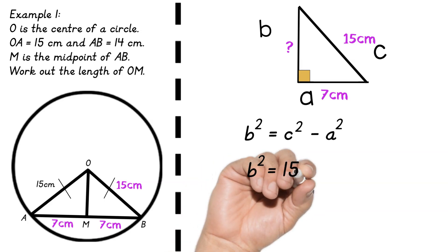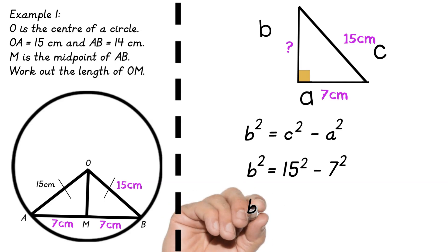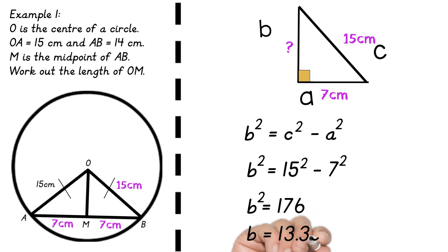Work out 15 squared minus 7 squared on your calculator. So I get b squared equals 176. So to find b I just need to square root 176. Now the question didn't say to give reasons so this is good enough but if it did for each stage you would need to explain why. So O to A is a radii etc.